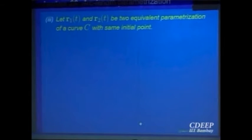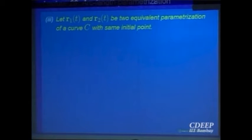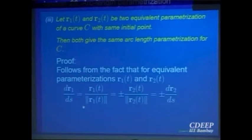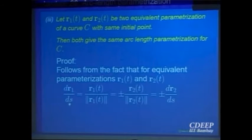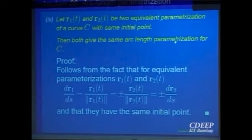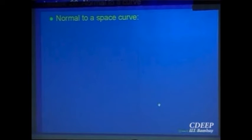Finally, we show that arc length parameterization is in some sense invariant under equivalence of curves. If two curves r₁ and r₂ are equivalent, they will give the same arc length parameterization — it doesn't matter which one you start with. To see this, note that the unit tangent vectors to r₁ and r₂ are the same except for a change of sign. So dr₁/ds equals ±dr₂/ds, meaning their norms are the same. With the same initial point, there is a unique arc length parameterization.